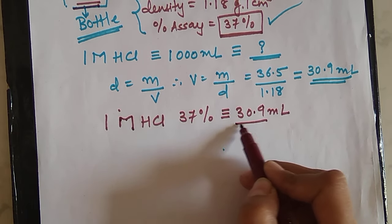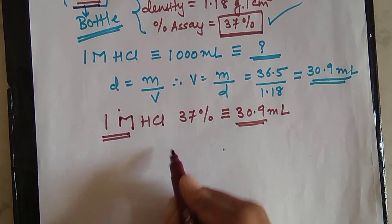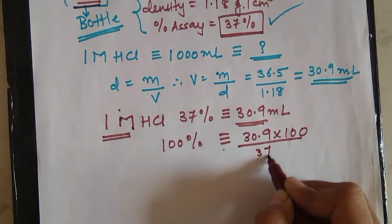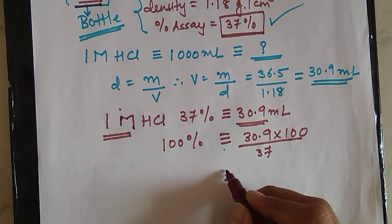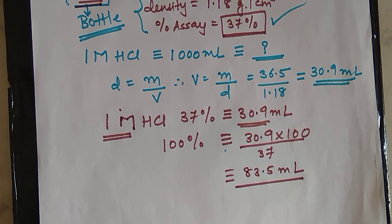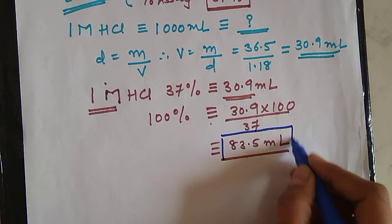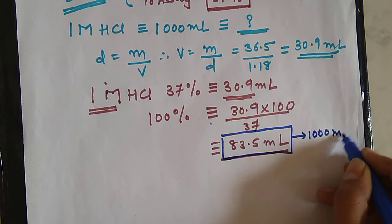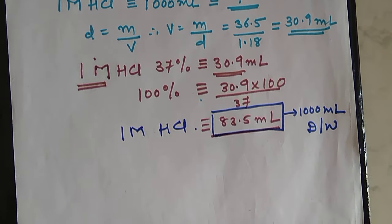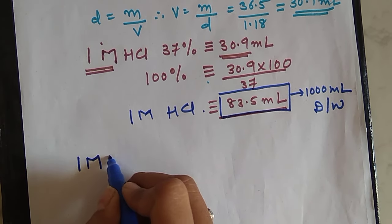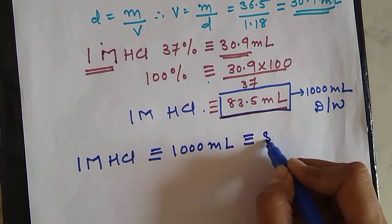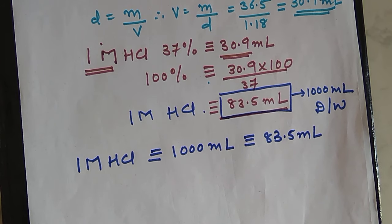For 37% SA it is around 30.9 ml of HCl for 1 molar. Now, for 100% SA, how much will it become? It will be equal to 30.9 × 100 / 37, which gives you almost equal to 83.5 ml. So now, this indicates that 83.5 ml of HCl is to be dissolved in 1000 ml of distilled water, which gives you 1 molar HCl. So now we have our factor: for preparation of 1 molar HCl in 1 litre or 1000 ml, we require 83.5 ml of concentrated HCl.